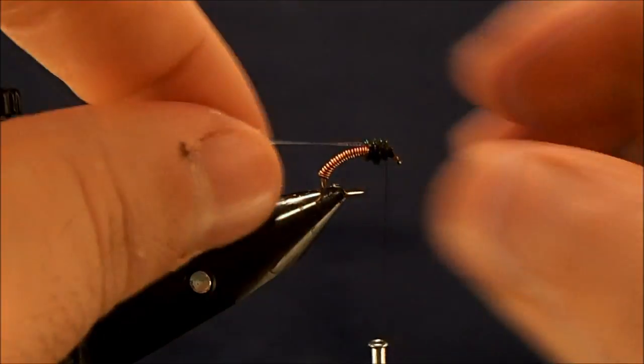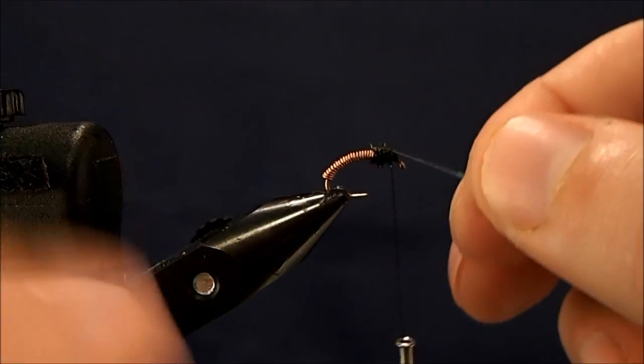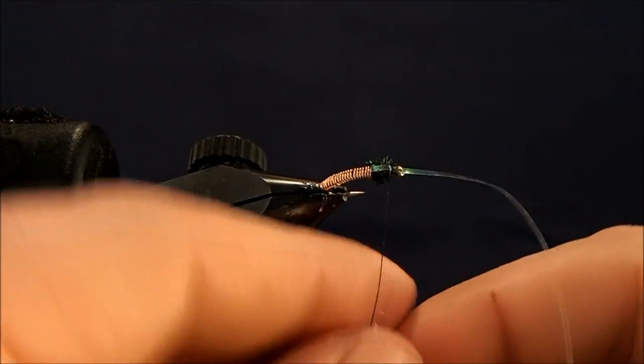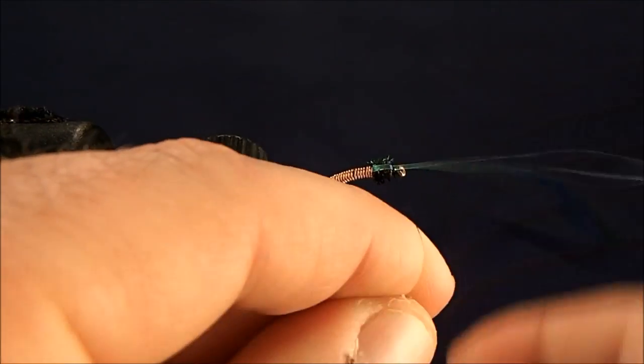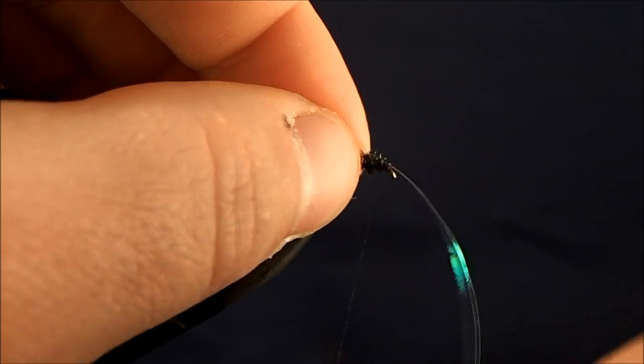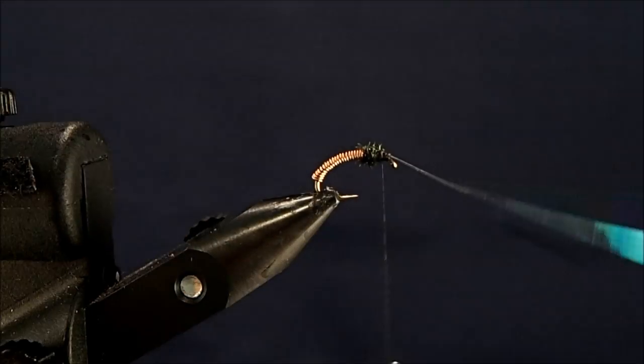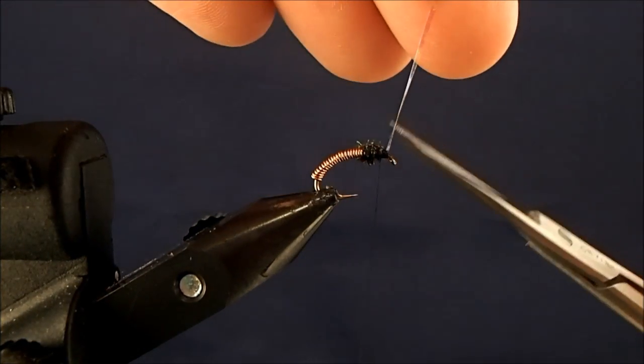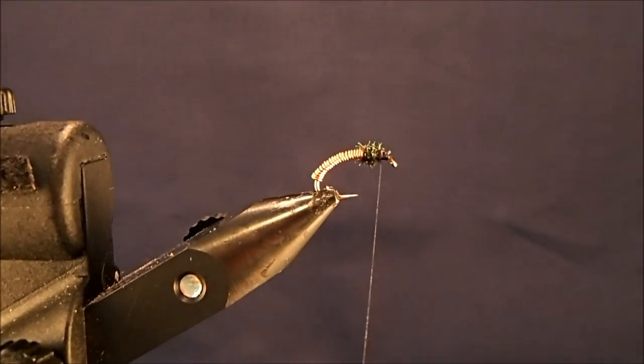I'll fold my flashback over. Give a wrap to hold it. Make sure that it's in the right position. Take another wrap. And every wrap that I do after this, I'm advancing back away from the eye. Because the last thing I want to do is crowd that eye, because I've got one more piece of material to tie in. And that is the CDC.